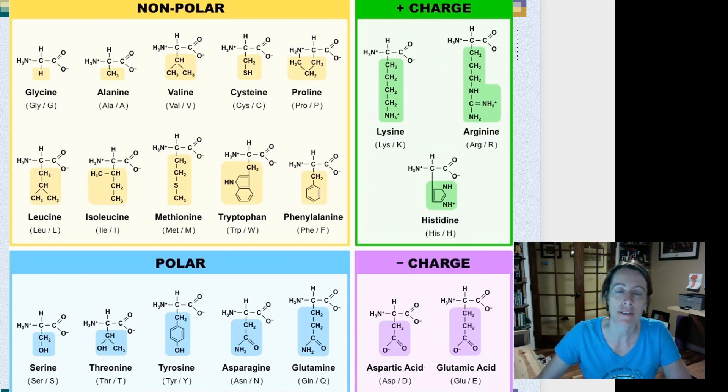And then we also have, because we're scientists and we don't like to write a lot, we have abbreviations for them. We have three letter abbreviations, and we even have one letter abbreviations because we want to get real lazy. So for example glycine, we use gly and G. Valine, we use val and V.